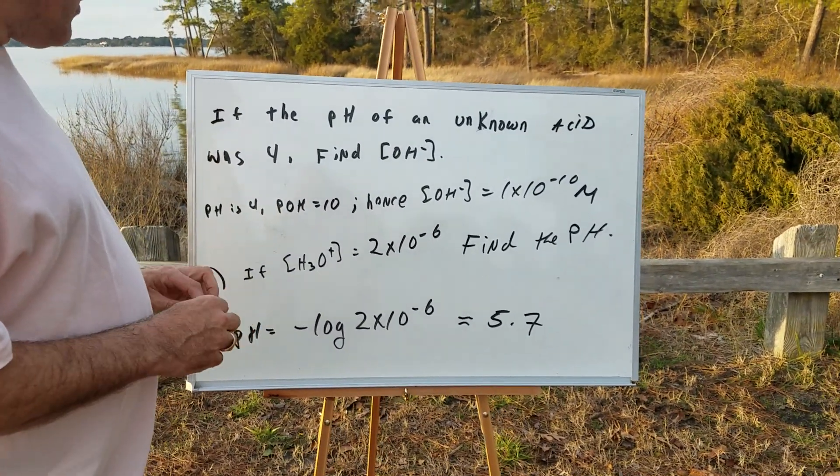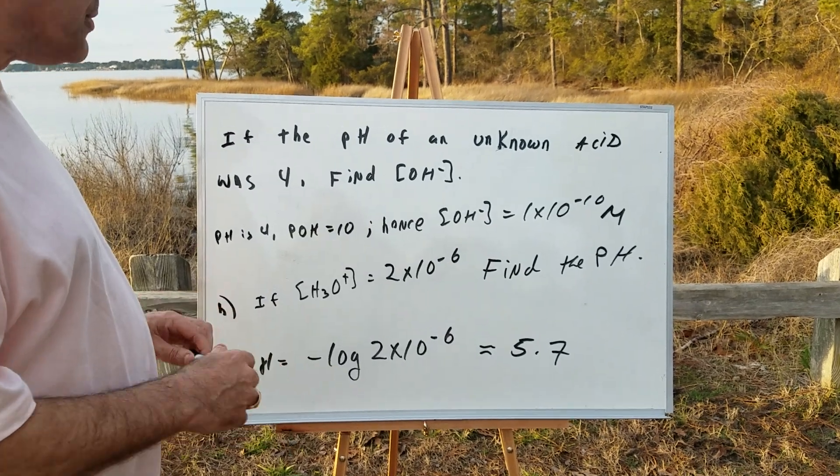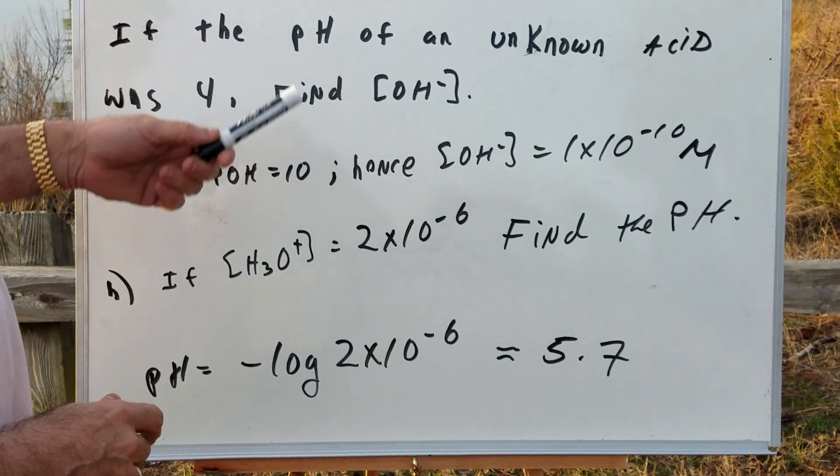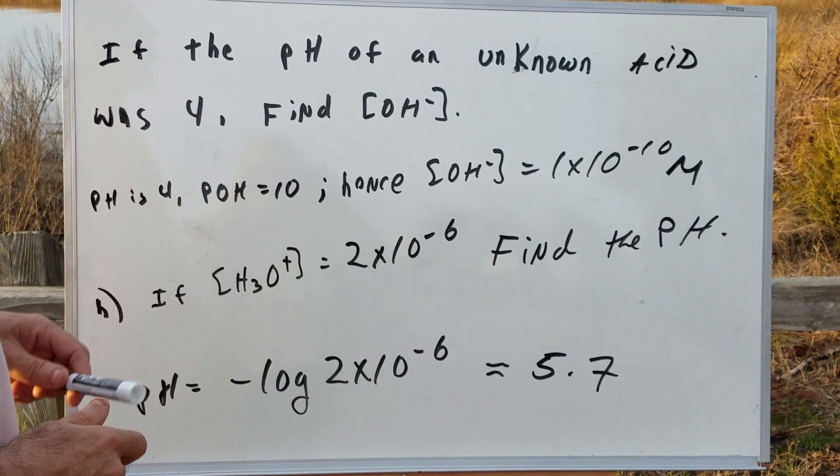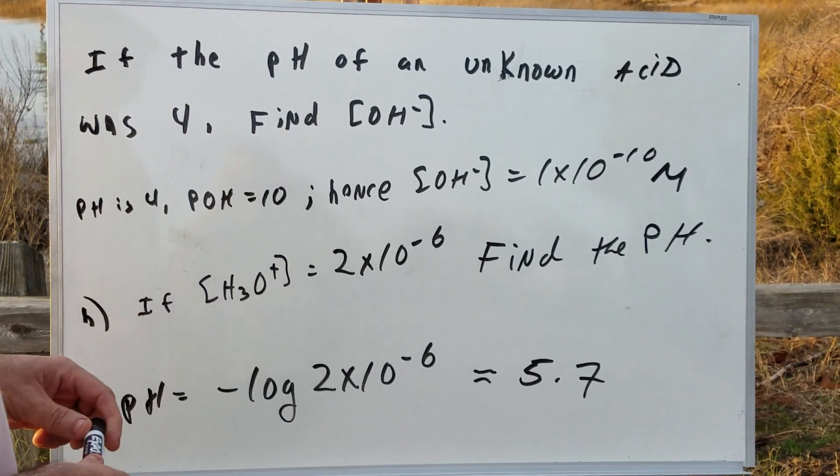Now, this is a standard type of question which 100% is likely to land on a test. If the pH of an unknown acid is 4, find the OH minus concentration.